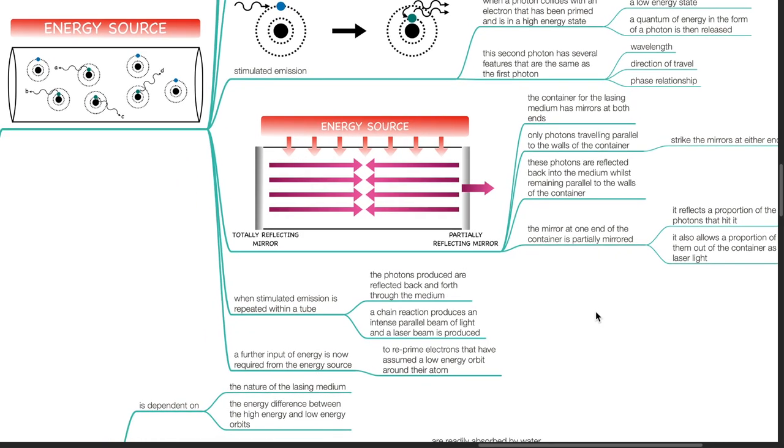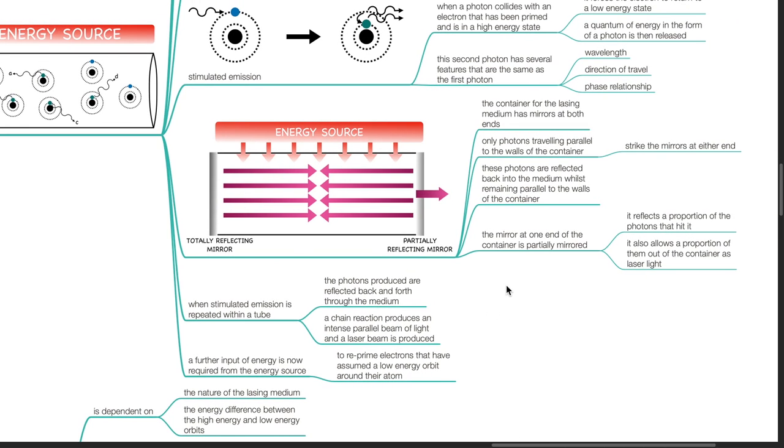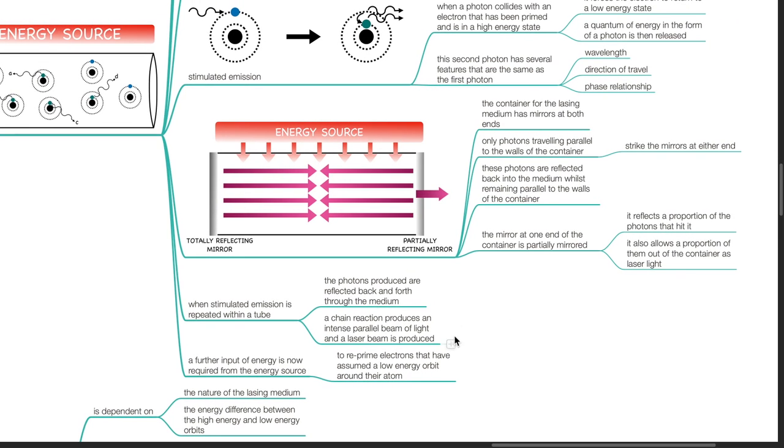When stimulated emission is repeated within a tube, the photons produced are reflected back and forth through the medium. A chain reaction produces an intense parallel beam of light and a laser beam is produced. Further input of energy is now required from the energy source to reprime electrons that have assumed a lower energy orbit around their atom.